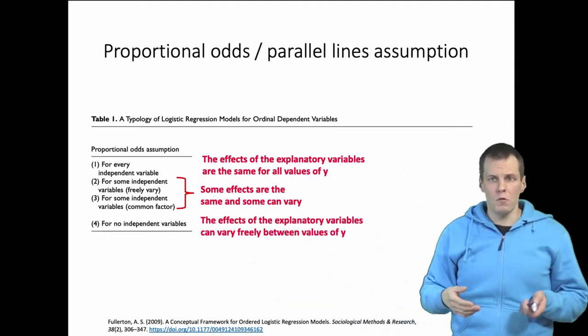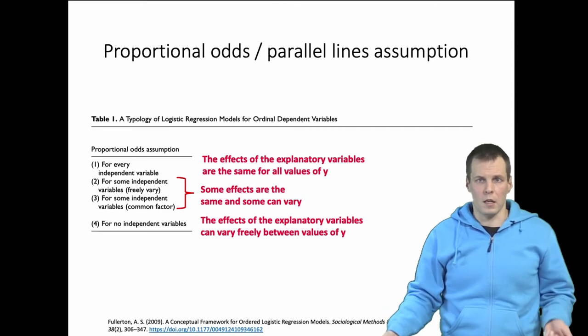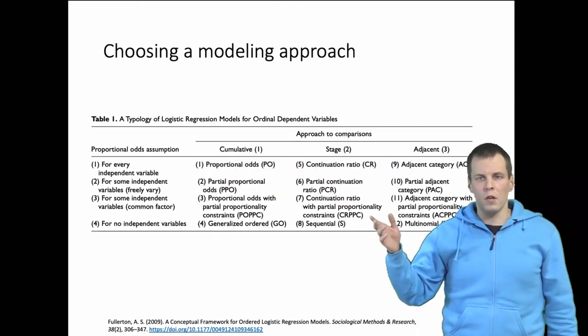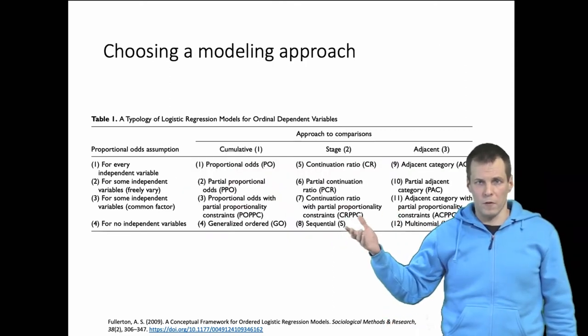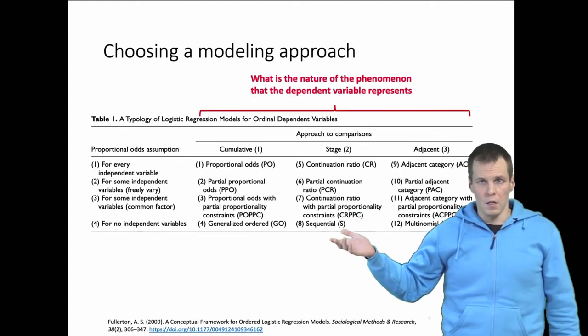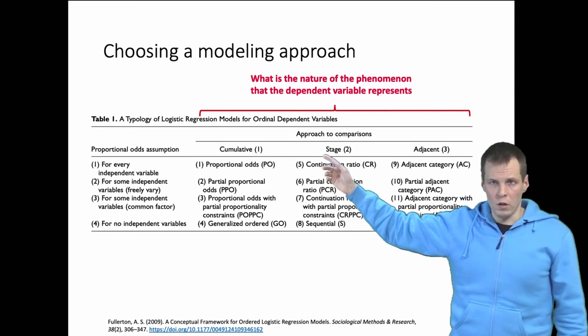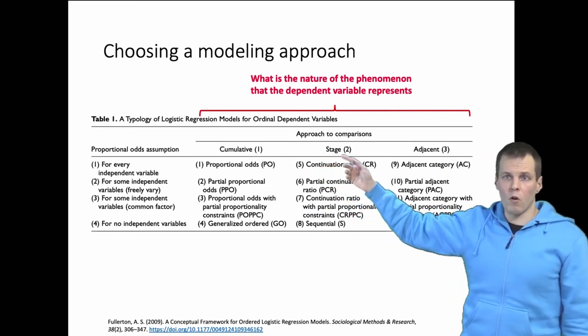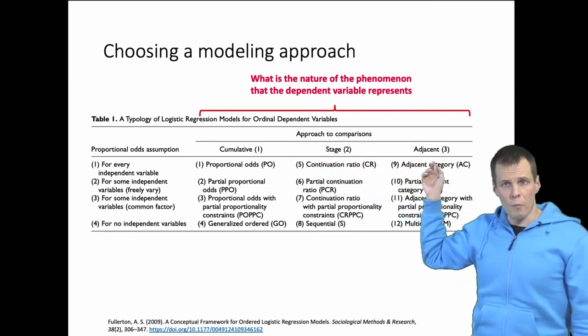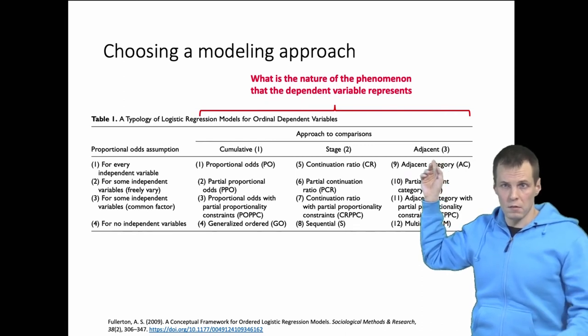So how do you choose your modeling approach then? You need to consider first: what is the nature of the phenomenon that you're explaining? Is it a rank? Is it something that you continue along like a stage model, or is it just comparisons between two adjacent positions?